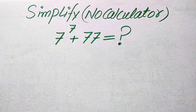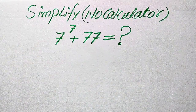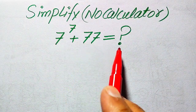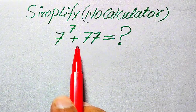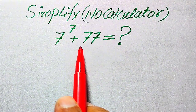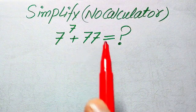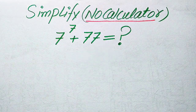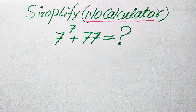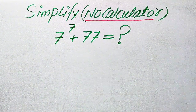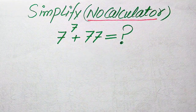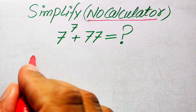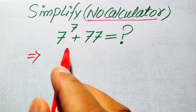Hello everyone. How to simplify this nice algebraic expression: 7 to the power of 7 plus 77 — what does this equal? We write this algebraic expression into its simplified or lowest form. Remember, a calculator is not allowed in this problem. We need to show all of the working on paper, so here we solve this step-by-step.